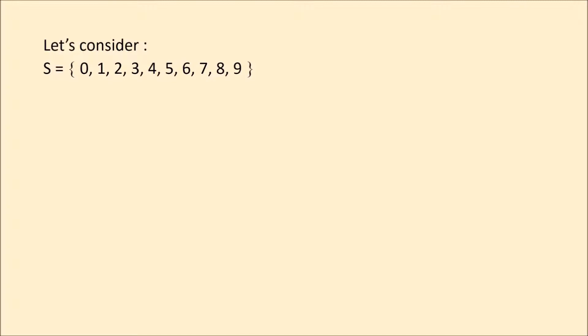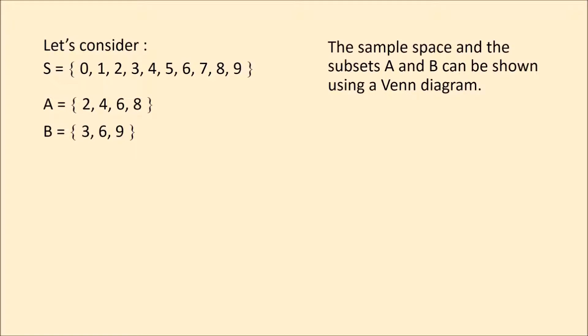Let's consider the sample space S as {0, 1, 2, 3, 4, 5, 6, 7, 8, 9}. Subset A contains numbers that are multiples of 2. Subset B contains numbers that are multiples of 3. The sample space and subsets A and B can be shown using a Venn diagram.